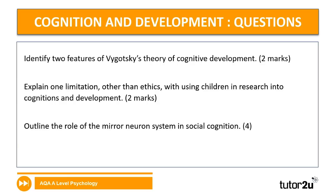Our next topic in Section B is cognition and development. Three short questions and a 16-marker: identify two features of Vygotsky's theory of cognitive development for two marks; explain one limitation other than ethics of using children in research into cognition and development for two marks; and outline the role of the mirror neuron system in social cognition for four marks — eight marks total, roughly 10 minutes. Pause and attempt these before we look at the 16-marker.